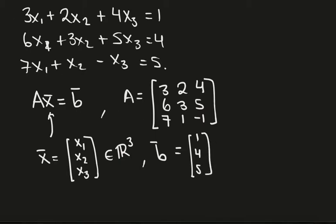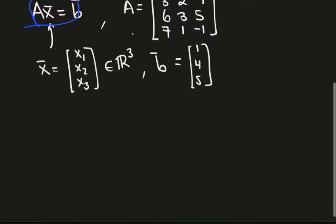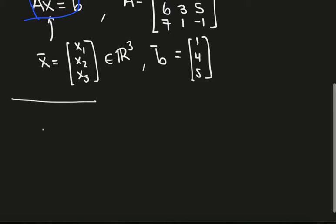The fact that we can write this system in this form is just a basic consequence of the way matrices are multiplied. Remember, we go across and then down.